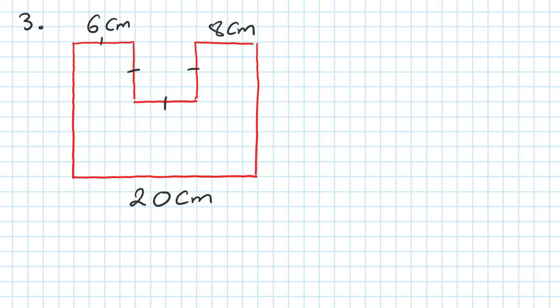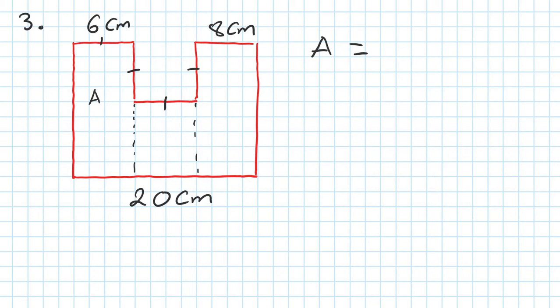Number three. To find the area - you've got three ways to do it. The first way, you can cut into three strips - A1, A2, A3. You need to figure out the missing lengths first. This is six, this is twenty, and this is eight. To work out the missing length, you go 20 take away 8 take away 6, to give you that. This is sixteen all the way across. So therefore this length here must be 10 centimeters. Then you can work out area one, area two, and area three, and add them up.